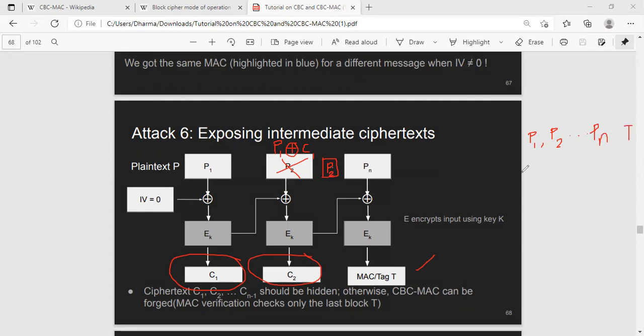What is the new corrupted plaintext? Is P1. The second block is interesting: is P1 XOR with C1. The third block is P2. So totally n plus one blocks.